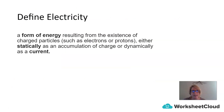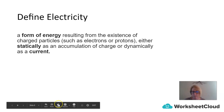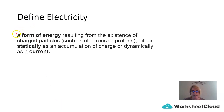It is important that you get down a definition for electricity. Electricity is a form of energy resulting from the existence of charged particles — referring to electrons or protons. They can either be statically charged, which is an accumulation of charges, or that form of energy can be dynamic and flow, as in an electric current.